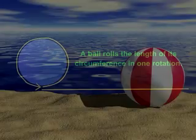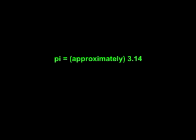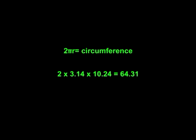We know that a ball rolls the length of its circumference in one rotation. To calculate the circumference of a sphere, use the formula 2πr. We will use the value 3.14 for pi. The radius of our beach ball is 10.24 inches. Doing the math, the circumference is 64.31 inches.